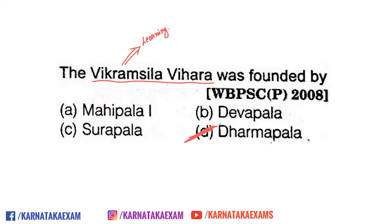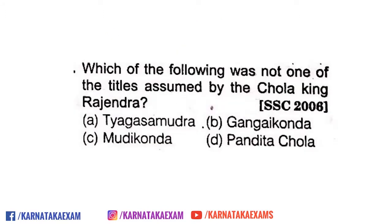Vikramasila Vihara was established after Nalanda. The reason for establishing it was the declining quality of scholarship at Nalanda, which is why Vikramasila Vihara was formed. Presently it is located in Bihar — specifically in Bhagalpur, Bihar.